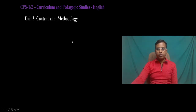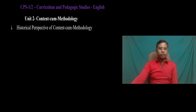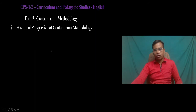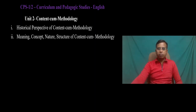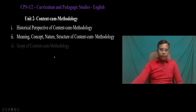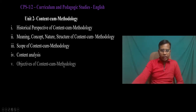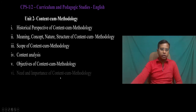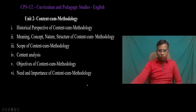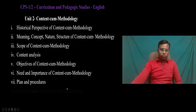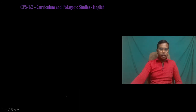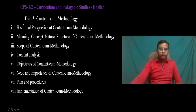The second unit is Content Come Methodology — the concept of CCM. The sub-topics are: historical perspective of CCM; meaning, concept, nature, and structure of Content Come Methodology; scope of CCM; content analysis; objectives of CCM; need and importance of Content Come Methodology; and plans, procedures, and implementation of Content Come Methodology. These are the sub-topics we are going to cover in Unit 2.